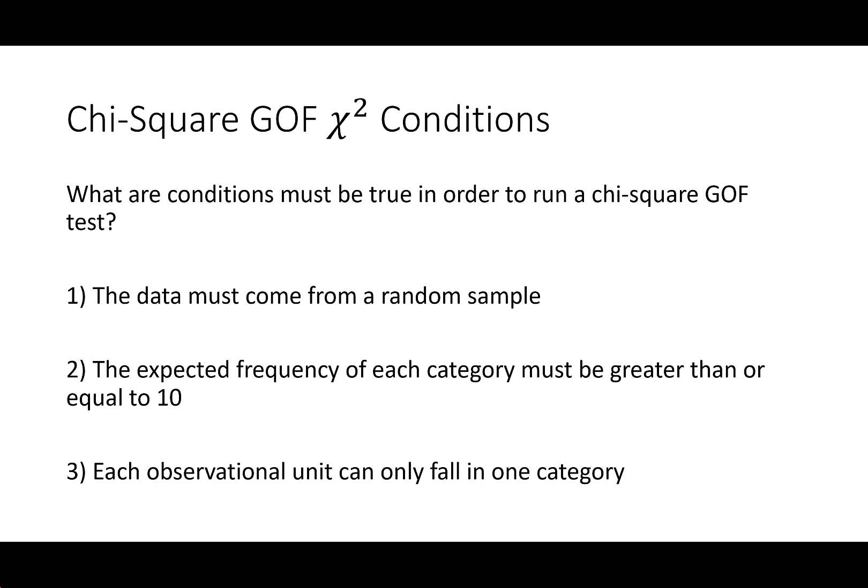We have three conditions that need to be met in order for all this stuff to work out in terms of the chi-squared goodness-of-fit test. One of which is, like we always see, the data must come from a random sample.